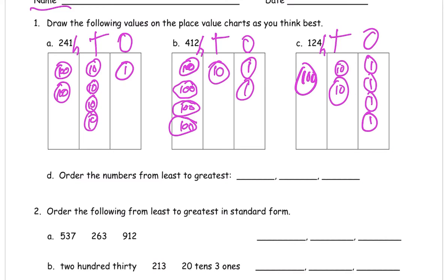Now we're gonna order numbers from least to greatest. The least is the smallest so we're gonna look at the one that has the fewest hundreds first and that would be the 124. And the largest would have the most hundreds, that's the 412. And the 241 goes in the middle. Just like that.